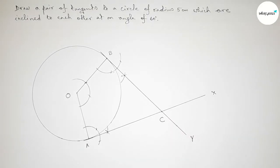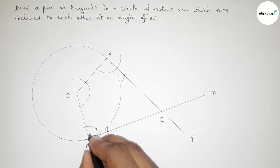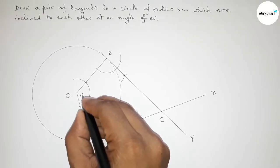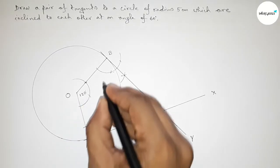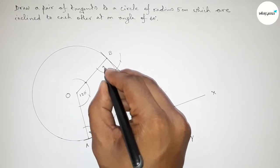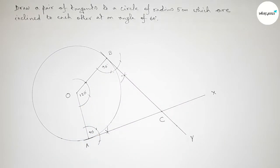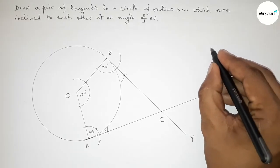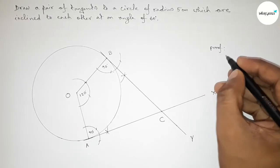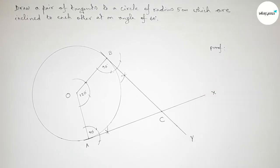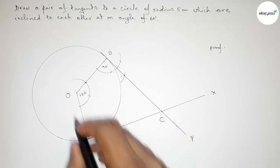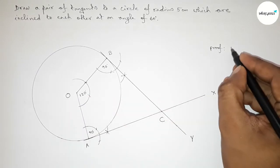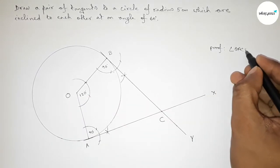Both tangents intersect at point C. So AX and BY are the two tangents. This angle is 90 degrees, this one is 120 degrees, and this one is 90 degrees.